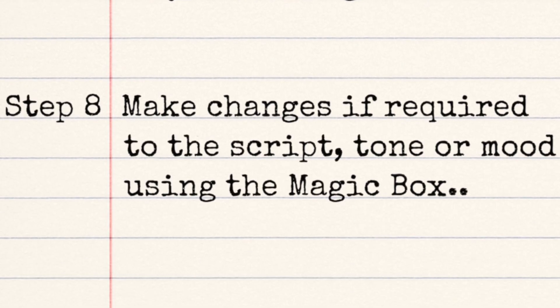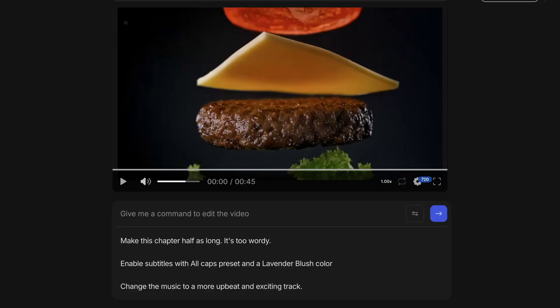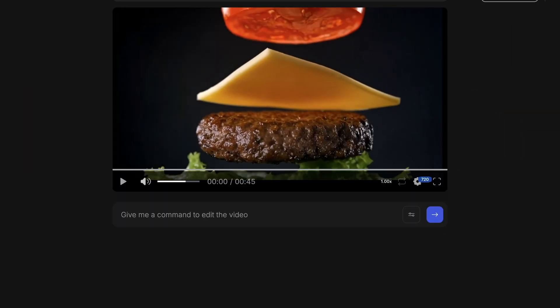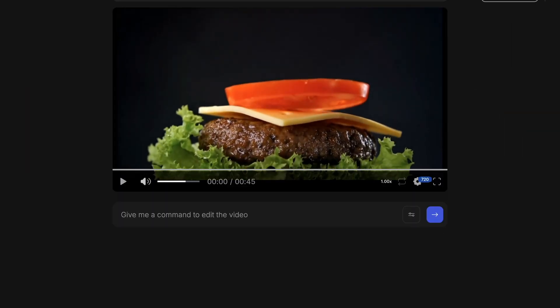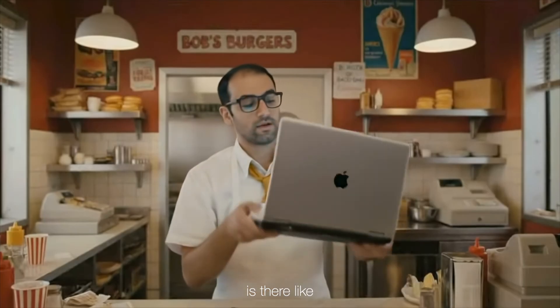Step eight: make changes if required to the script, tone, or mood using the magic box. Play classical music in the background instead. It's not fast food, it's food that's worth the work.